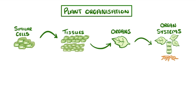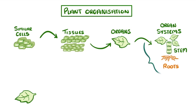To see how these fit together, we're going to take a look at the structure of a leaf, which itself is an organ. And along with its stem and roots, it forms an organ system whose function is the transport of substances around the plant.